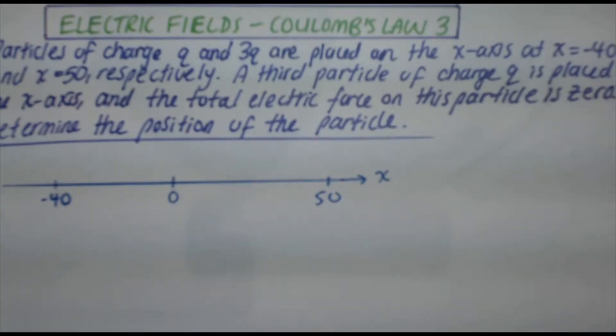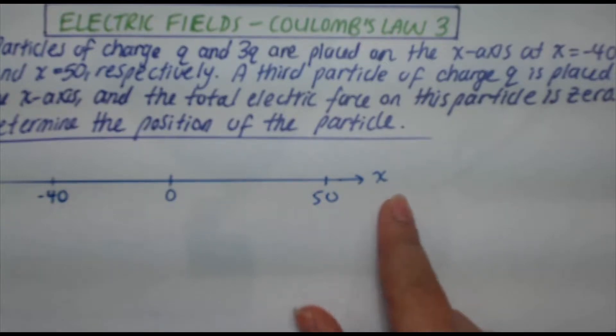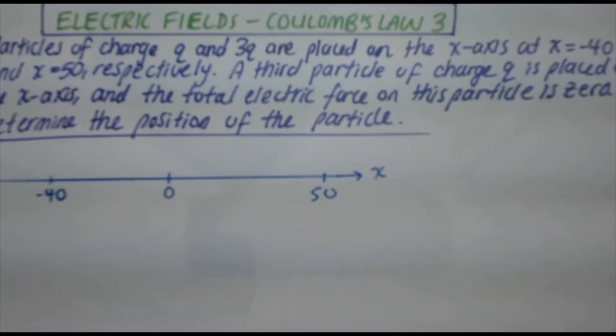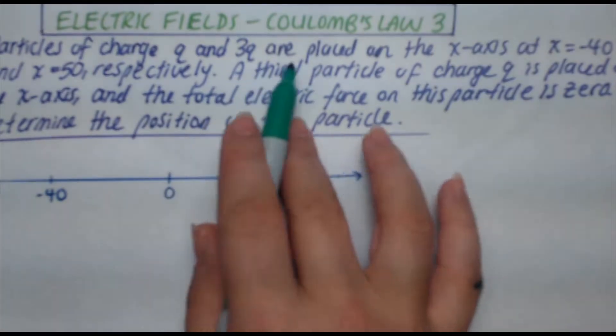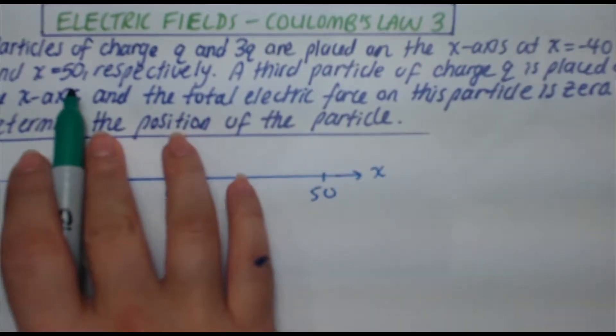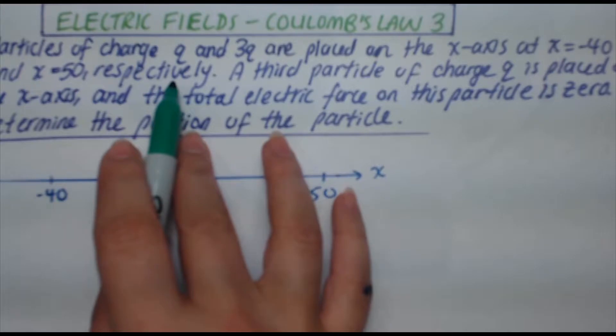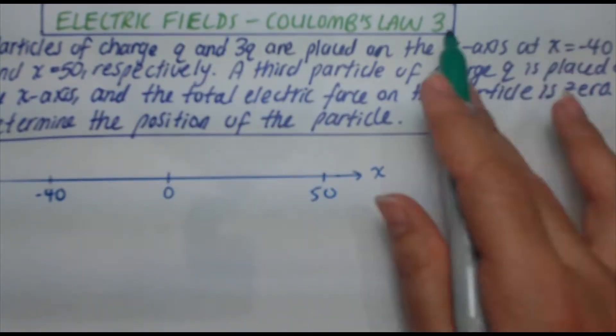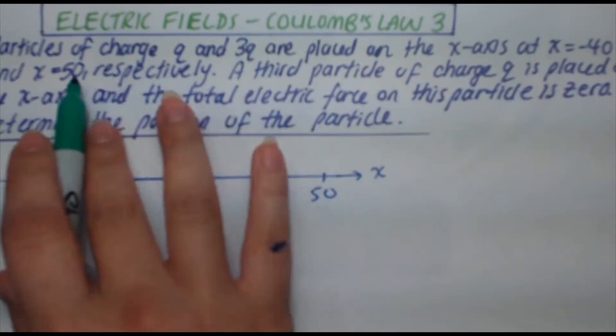I've already gone ahead and drawn the x-axis here, something straightforward with your zero and the two positions that you've been given. Now I know that q and 3q are placed at minus 40 and 50 respectively. When it says respectively that means whatever I said first for the charge, whatever I said first for the distance, those two go together and the second two go together.